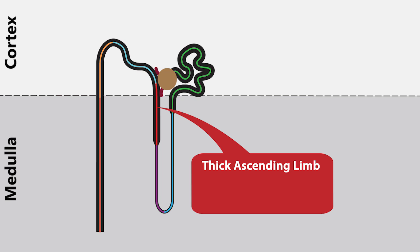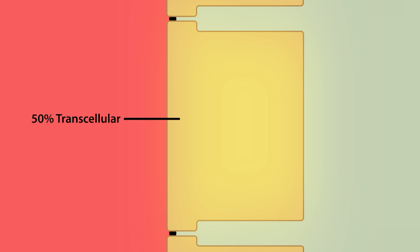The thick ascending limb reabsorbs about 25% of the filtered sodium load. For an average daily filtered load of 25,000 millimoles, 6,250 will be reabsorbed along the thick ascending limb, half by the transcellular route and the other half by the paracellular route.